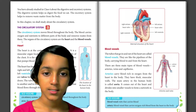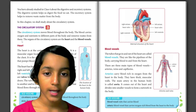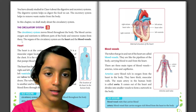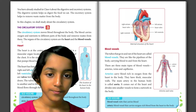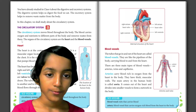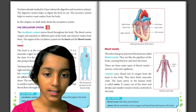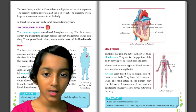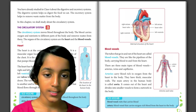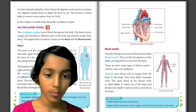Blood vessels. The tubes that go in and out of the heart are called blood vessels. They are like the pipelines of the body, carrying blood from the heart. There are three main types of blood vessels: arteries, veins and capillaries. Arteries carry blood rich in oxygen from the heart to the body.